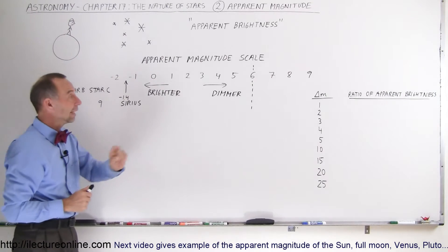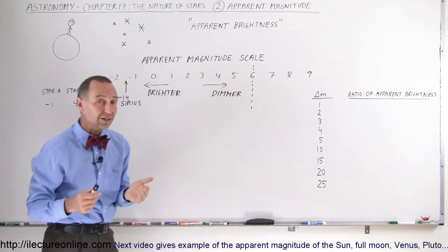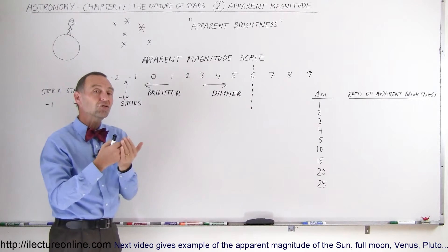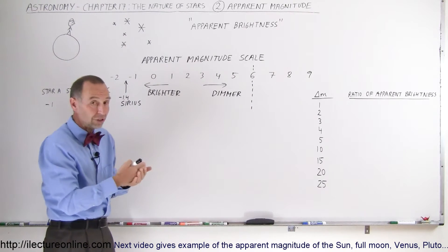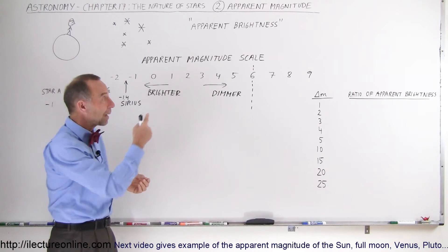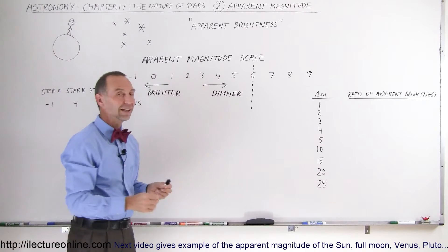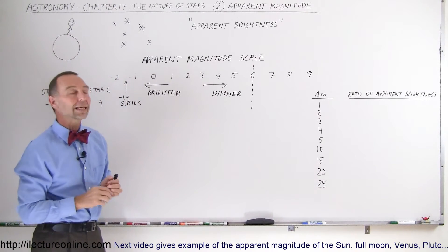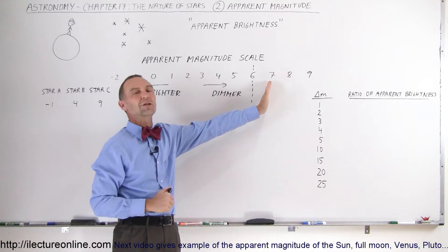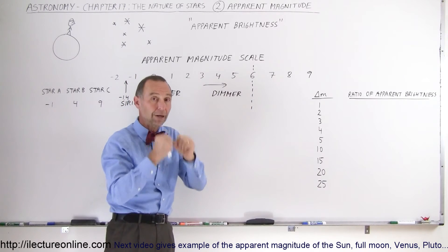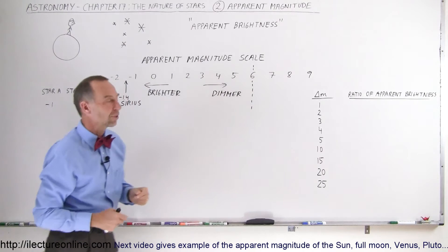One more thing to mention: an apparent magnitude of plus 6 is the faintest stars we can see with the naked eye. Any object — even galaxies, nebulas, or star clusters — that has a magnitude of plus 6 is barely visible with the naked eye. If something has an apparent magnitude of plus 7, it's no longer visible with the naked eye; we'd need a pair of binoculars or a small telescope to see those objects.